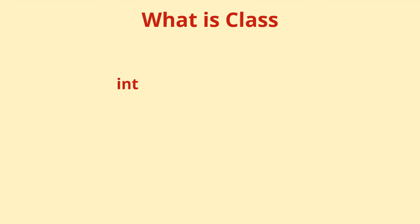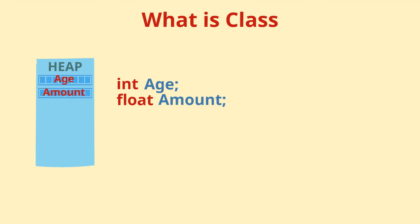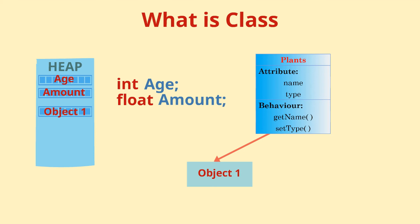If you compare with the primitive types such as int, float, in itself do not consume any space. But when you declare a variable of type int, space is then allocated for it. Similarly, you can create multiple class objects and then space will be allocated for each object.